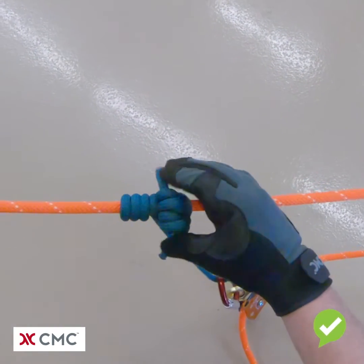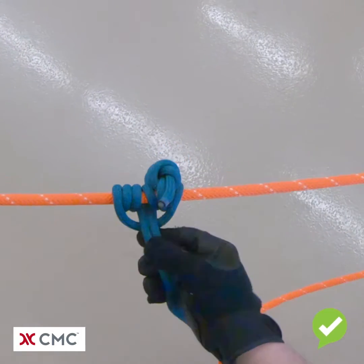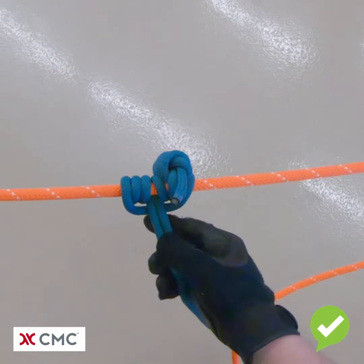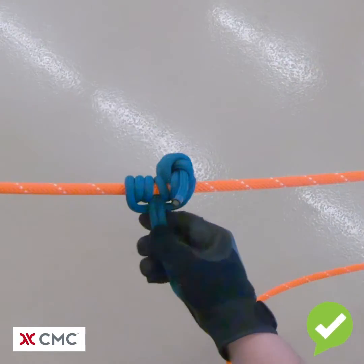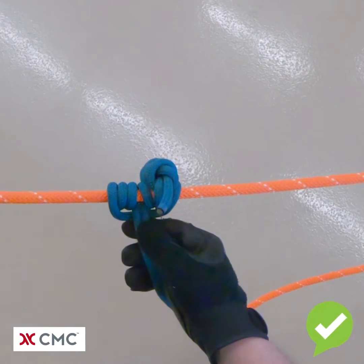What's wrong with this is the double fisherman's knot is incorporated in with the prussock hitch. That will now not allow for an efficient or safe use of the prussock.